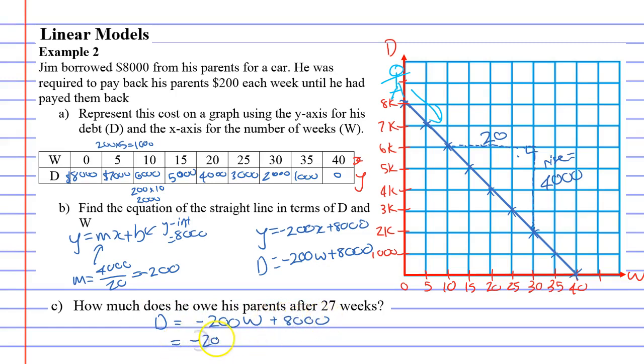Negative 200W plus 8,000. And then we're going to go negative 200 times W, which is 27, plus 8,000. And we'll see what we get. We get $2,600, which means that after 27 weeks, Jim will owe his parents $2,600.